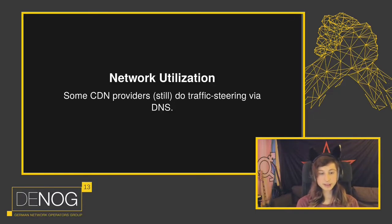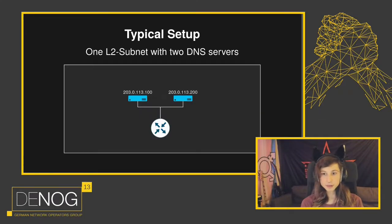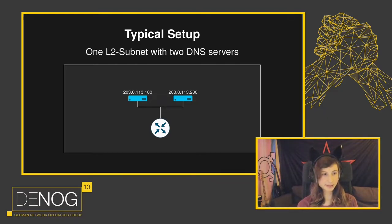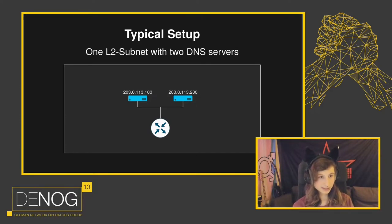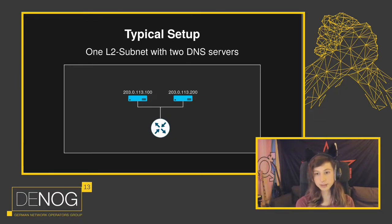So now let's have a look at how a traditional resolver setup works, to see how we can improve it using Anycast. This is a fairly typical DNS server setup in a small to medium-sized network. There is a layer two subnet with two DNS servers, and we have two IP addresses which we give our customers, who then will round-robin or just ask the first one until requests time out.